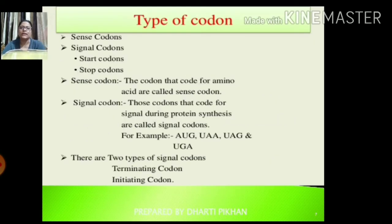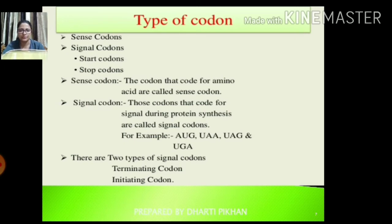The types of codons are sense codons and signal codons, then start codons and stop codons. Sense codons are those that code for amino acids. Signal codons are those that code for a signal during protein synthesis. Examples of signal codons are AUG, UAA, UAG, and UGA — these are the 64 entries shown in the table.